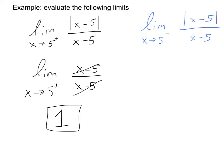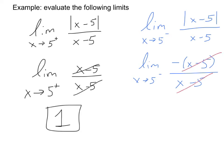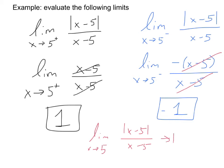Now let's take a look at the blue problem on the right. In this case, I'm approaching from the left. If I'm approaching from the left, the thing inside is negative. So I get rid of the absolute value bars by supplying my own negative. I end up with negative 1. This limit from the left approaches negative 1. Now that I've done both sides, can you tell me what the double-sided limit as x approaches 5 of the absolute value of x minus 5 over x minus 5 is? That double-sided limit does not exist, because the two values were different from one another.